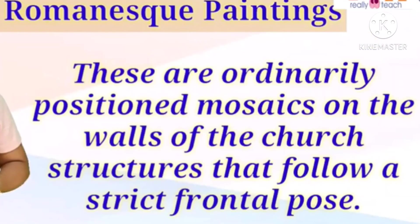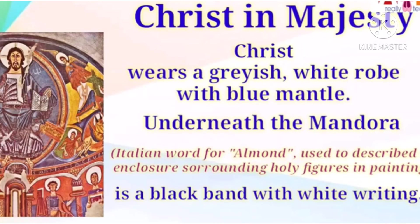Next is Romanesque painting under the medieval art era. These paintings are ordinarily positioned as mosaics on the walls of church structures, following a strict frontal pose. An example of Romanesque painting is Christ in Majesty — this mural painting has been moved to Barcelona and replaced by a replica.